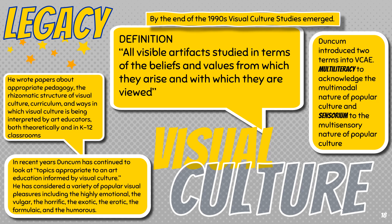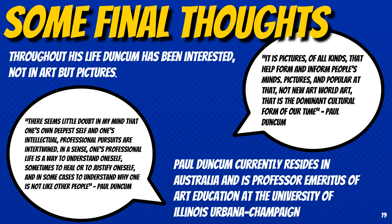In recent years, Duncan has continued to look at topics appropriate to an art education informed by visual culture. He has considered a variety of popular visual pleasures, including the highly emotional, the vulgar, the horrific, the exotic, the erotic, the formulaic, and the humorous. Specifically, he looked at politically incorrect British seaside postcards and the gruesome tropes of horror movies. Duncan approached each of these pleasures in terms of linking historical examples to contemporary examples, with the intention of arguing that no matter how today's visual culture may appear — a decline from previous times — it was anything but. Throughout his life, Duncan has been interested not in art, but pictures. Duncan comments: "It is pictures of all kinds that help form and inform people's minds. Pictures and popular at that, not high art, that is the dominant cultural form of our time."